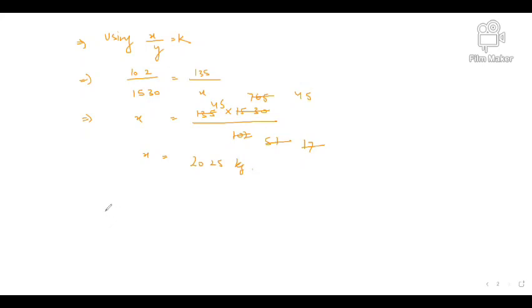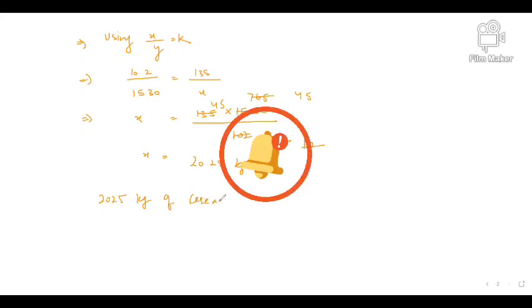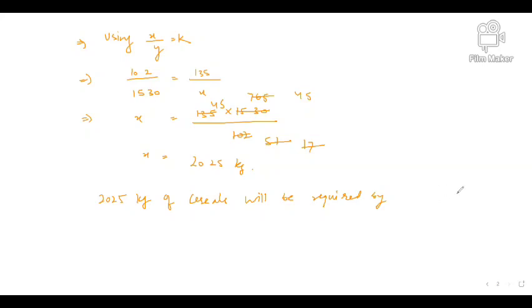45 multiplied by 45 would be equal to 2025 kilogram. So, our answer will be 2025 kilogram of cereals will be required by 135 members during the month. I hope question is clear.